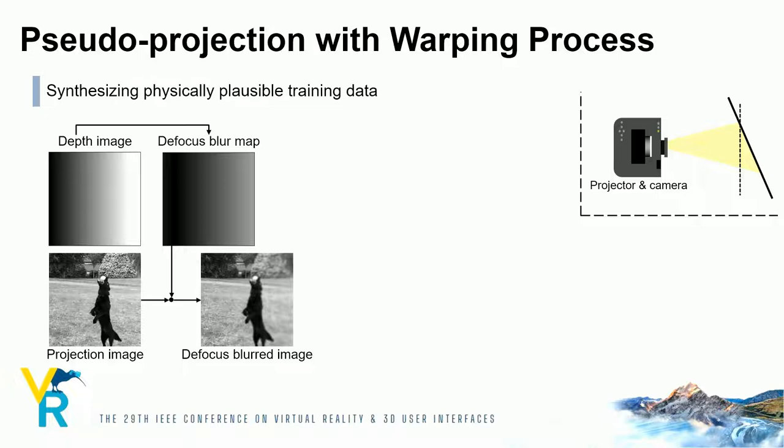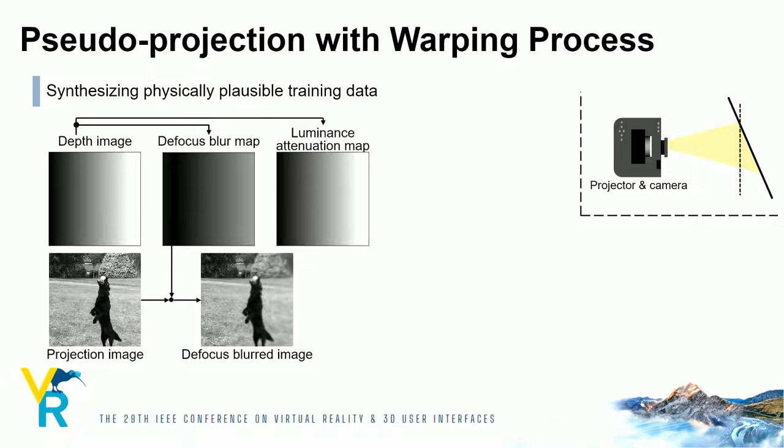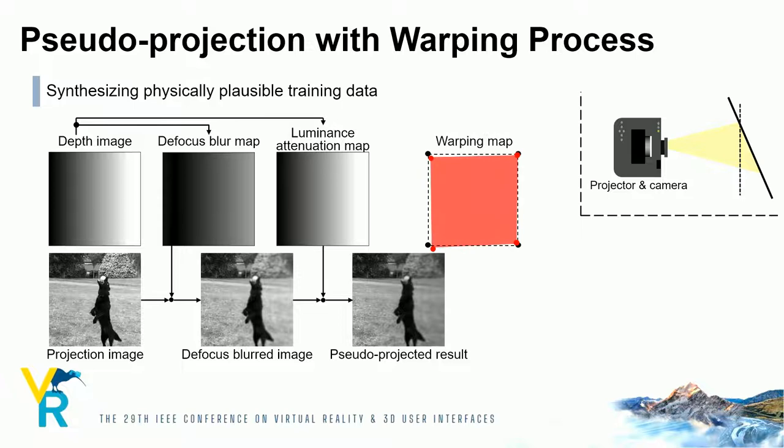When this projected image is captured by the camera, the luminance is attenuated due to the inverse square law of light intensity. Therefore, we generate a luminance attenuation map representing the luminance reduction. Based on the luminance attenuation map, the intensity of the blurred image is attenuated. Finally, we slightly warp the generated image, considering the imperfection of the alignment of the projector and the camera in a physical setup.